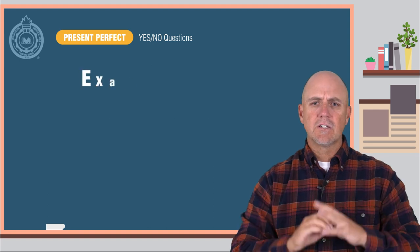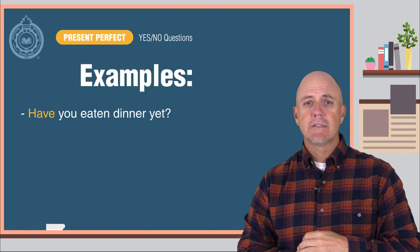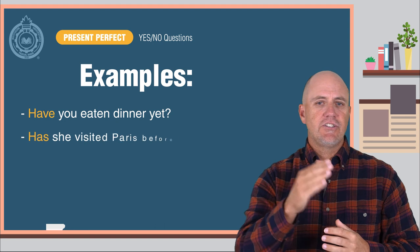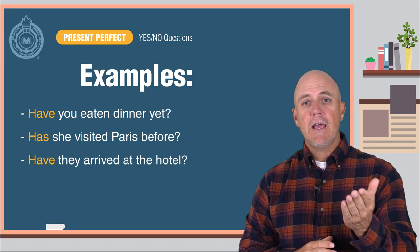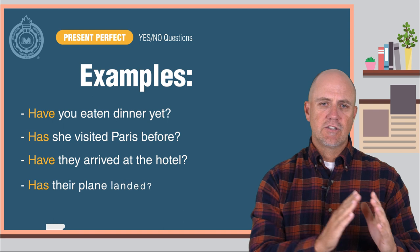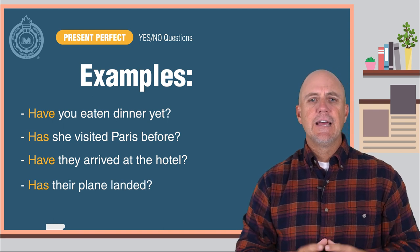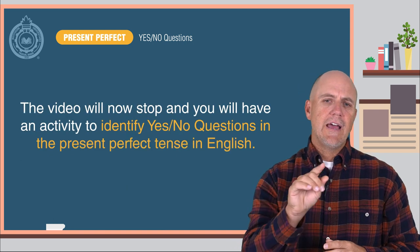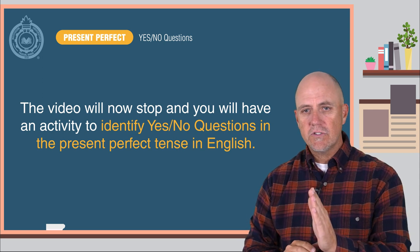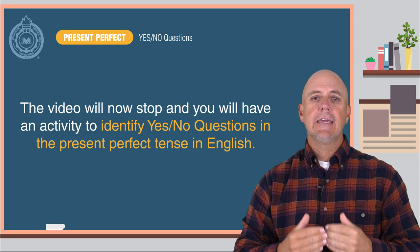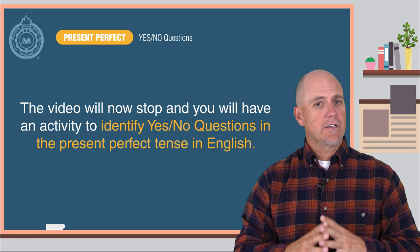Let's look at some examples. Have you eaten dinner yet? Has she visited Paris before? Have they arrived at the hotel? Has their plane landed? The video will now stop and you will have an activity to identify yes-no questions in the present perfect tense in English.